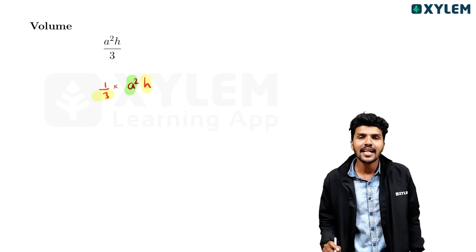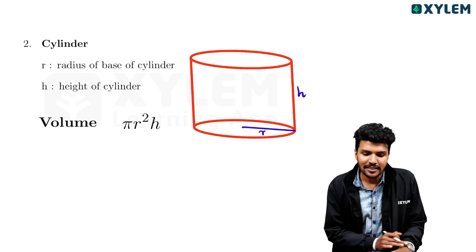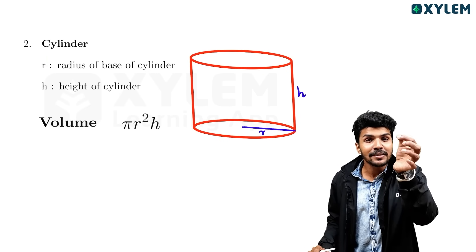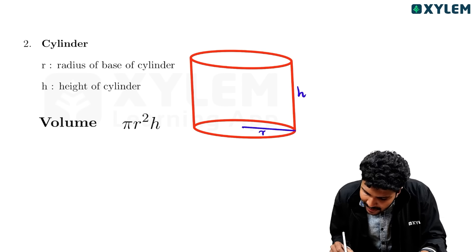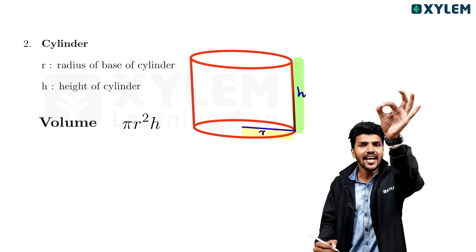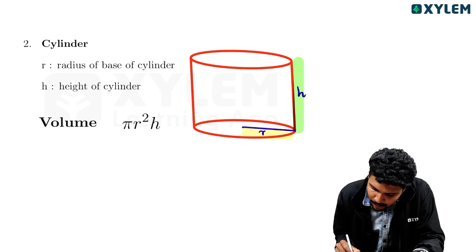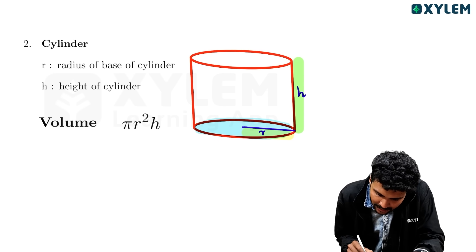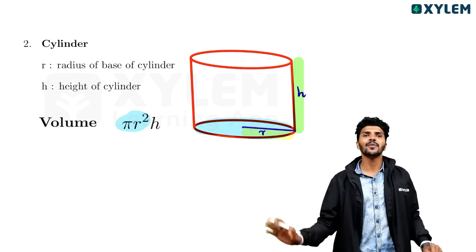Remember the difference between the two. Now let's learn about the cylinder. The cylinder has radius r and height h. The base is a circle with area pi r squared.